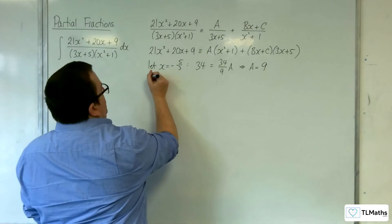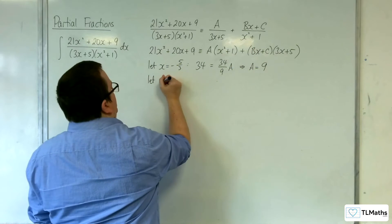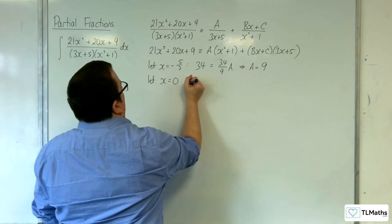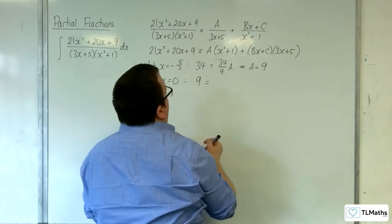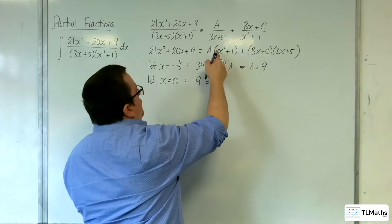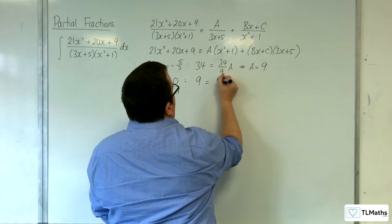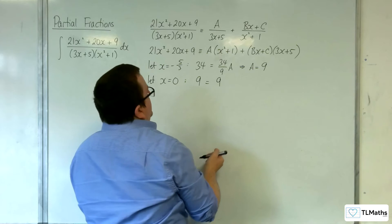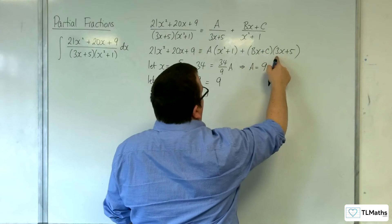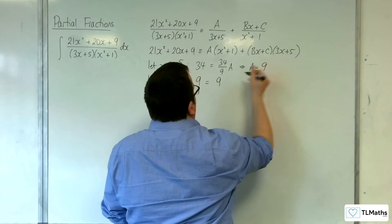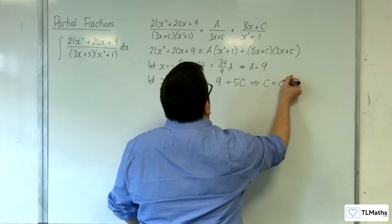Now I'm going to let x be 0 to knock out b. On the left hand side we've got 9. On the right hand side we've got 0 plus 1 lots of a, so that's 1 lot of 9, and c times 5, so plus 5c. Therefore c must be equal to 0.